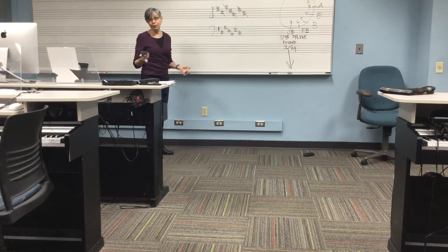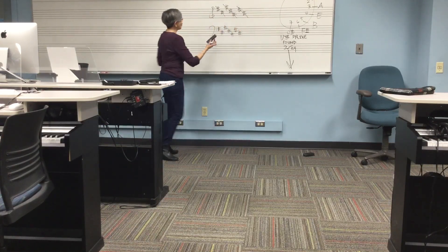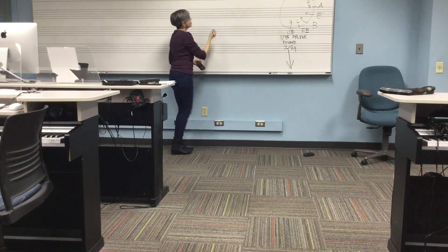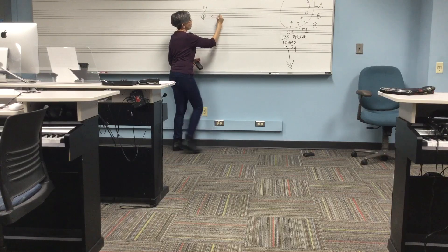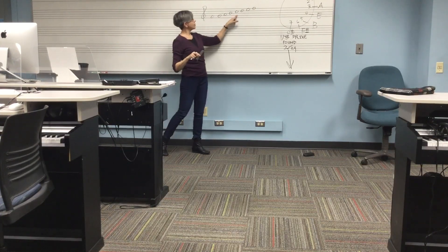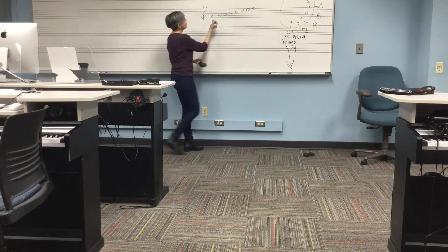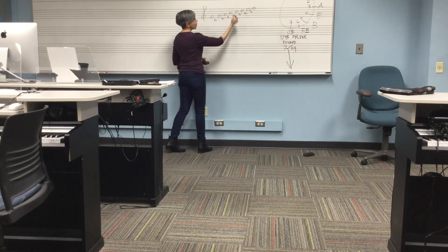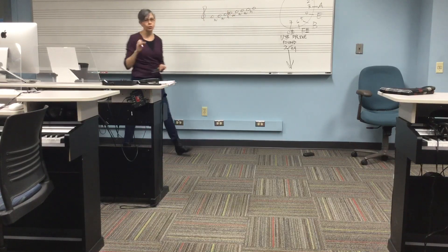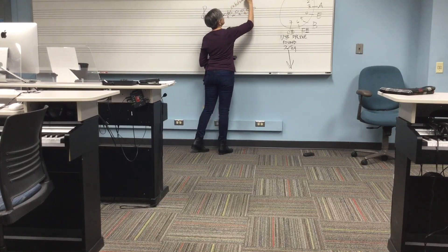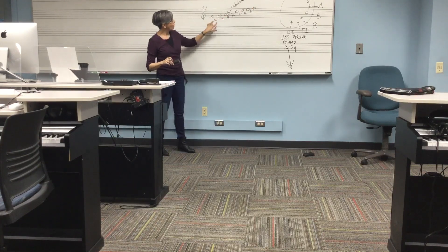Now for the other half: flats. Flats appear in a scale when we start on F and make a diatonic scale — F G A B C D E F — using whole steps and half steps. Following the template: whole, whole, half, whole, whole, whole, half — I have to use a flat on the fourth note of the scale, which is called the subdominant. So B becomes B flat, and the F scale has one flat.